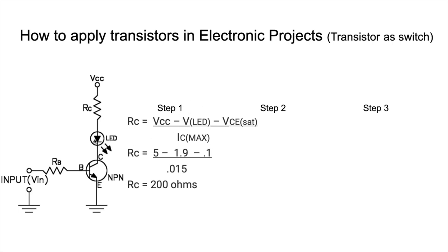Across the transistor junction there is also a voltage drop of about 0.1 V, obtained from the datasheet. Solving these values, the final value of RC comes out to 200 ohms. Now we have RC calculated.